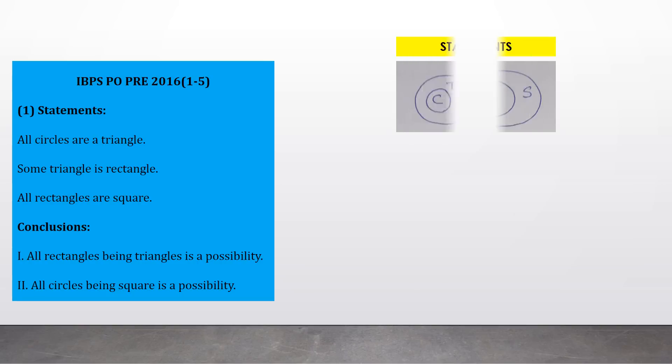Question 1 — Statements: all circles are triangles, some triangles are rectangles, and all rectangles are squares. You have to make a diagram as simple as possible. The first statement, 'all circles are triangles,' means the complete circle lies inside the triangle. 'Some triangles are rectangles' means a portion of the triangle and a portion of the rectangle overlap each other. 'All rectangles are squares' means the complete rectangle lies inside the square.